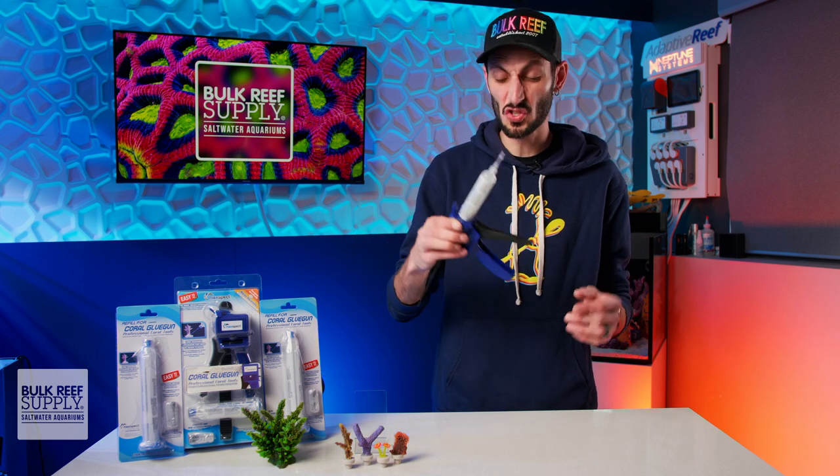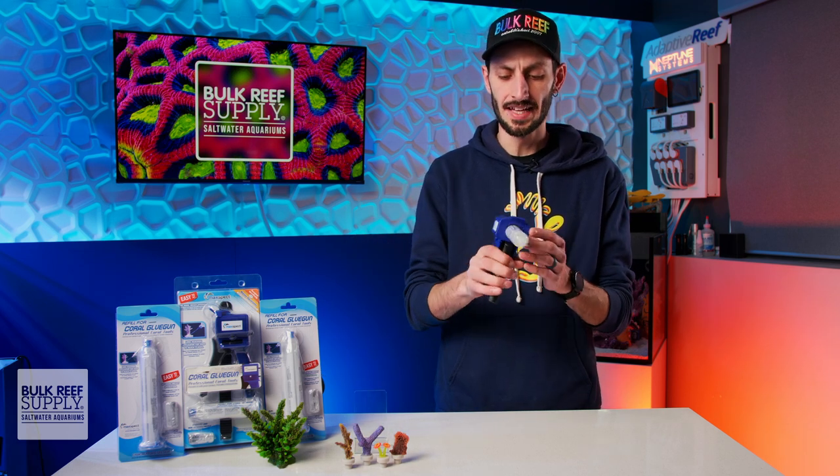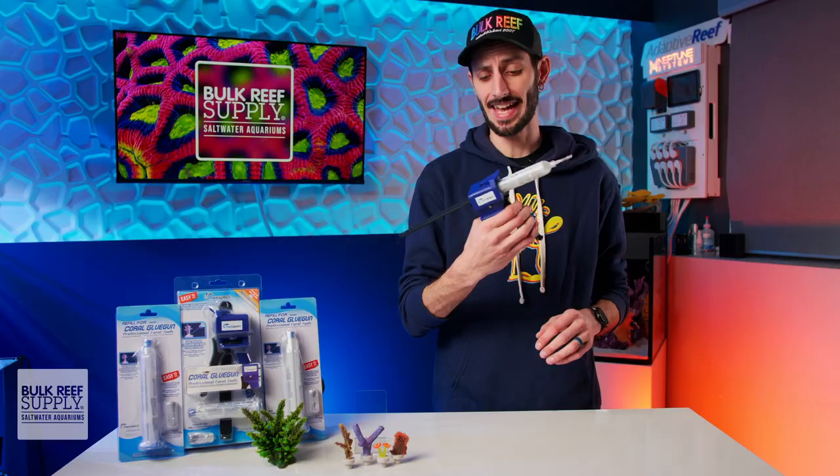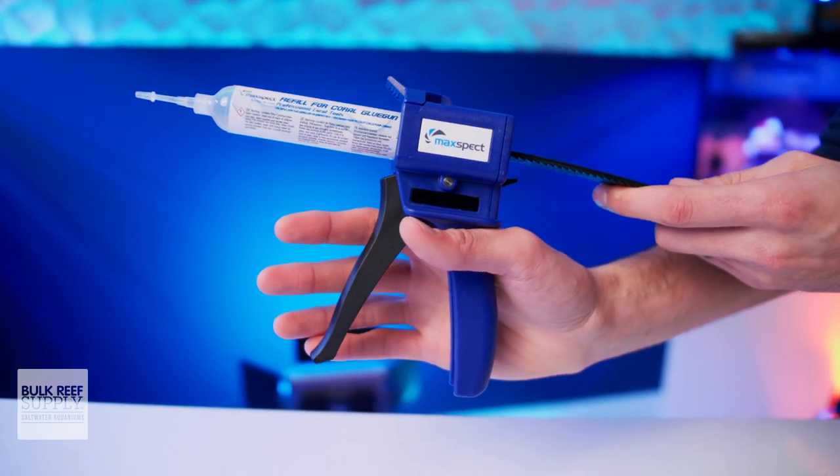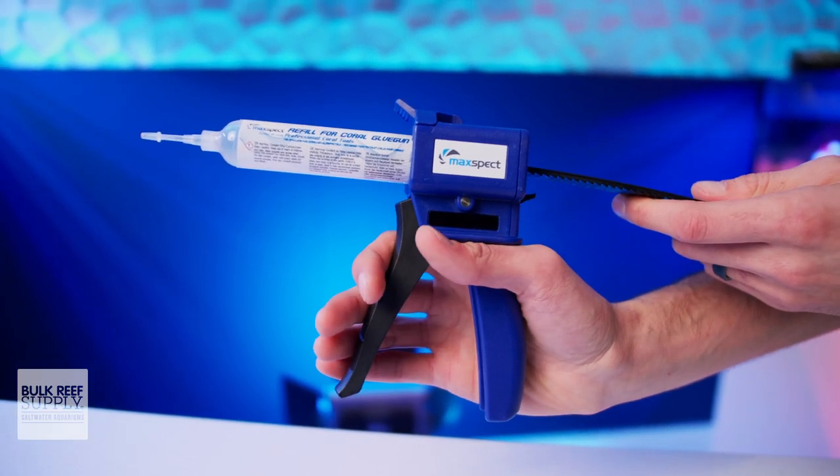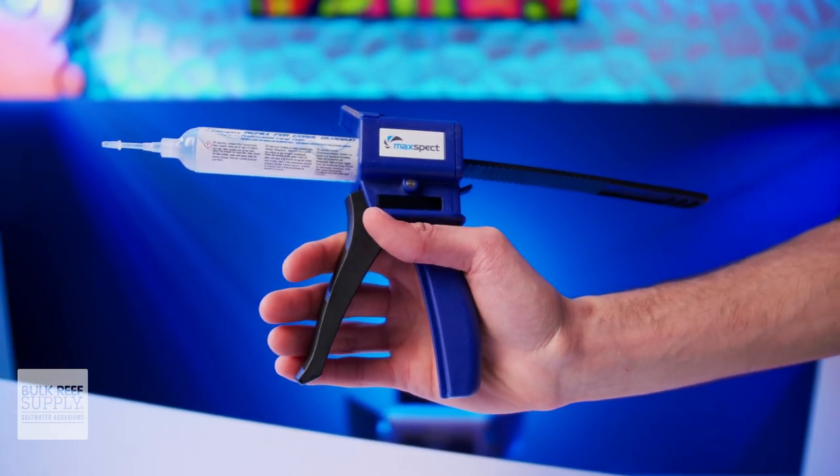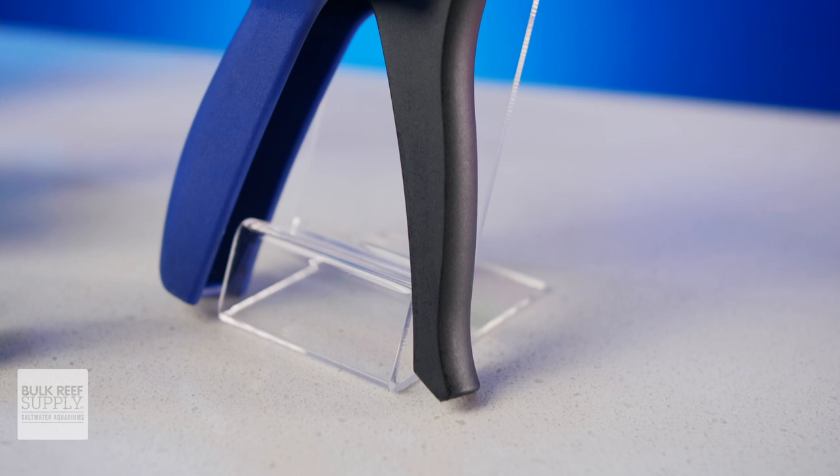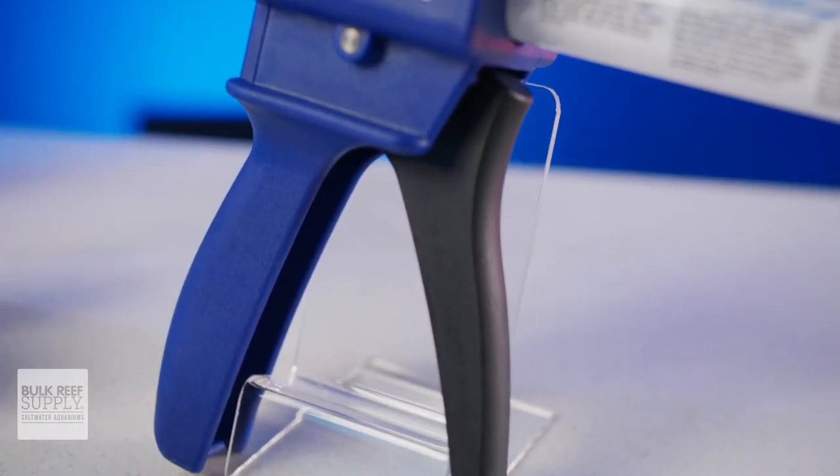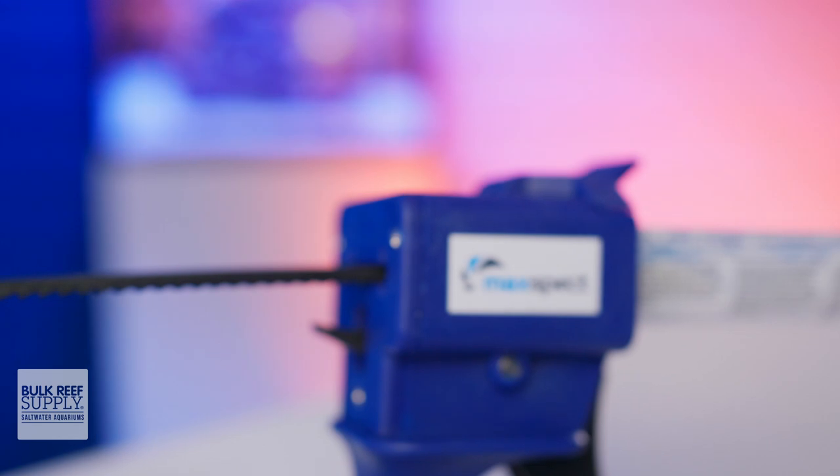The Coral Glue Gun feels solid and very well-built, and is pretty dang comfortable in the hand. Even for bigger hands like mine, which I was pleasantly surprised with. Maxpect states that it is made with non-corrosive materials, and that it's designed specifically for use around saltwater, which means it should hold up really well over time, and be a tool that you can rely on for years.